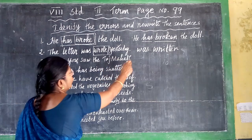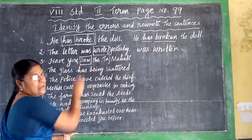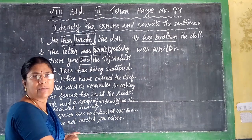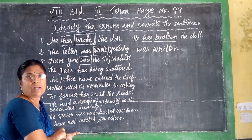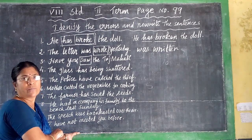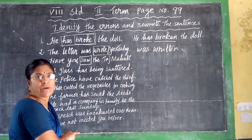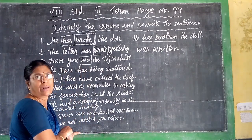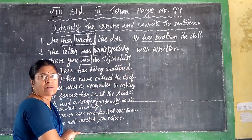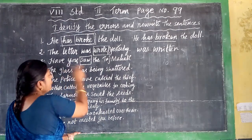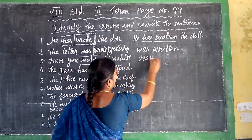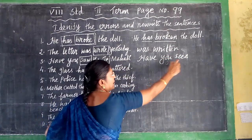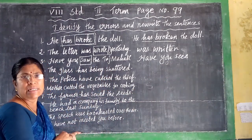Next: 'Have you saw the Taj Mahal?' — this is an interrogative sentence. The verb 'saw' is a past tense form. Have or has is always followed by the 3rd form of the verb. So instead of 'saw,' we write 'seen.' The correct answer is: 'Have you seen the Taj Mahal?' The forms are: see — saw — seen.